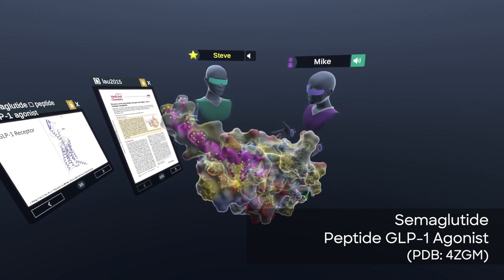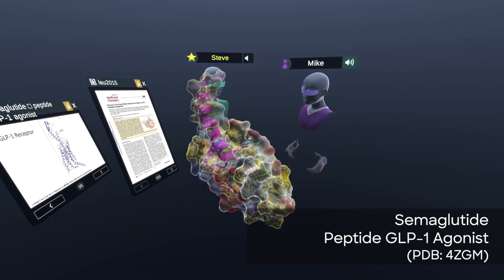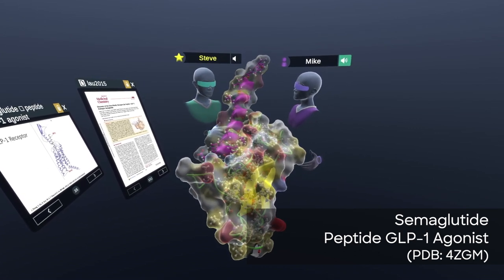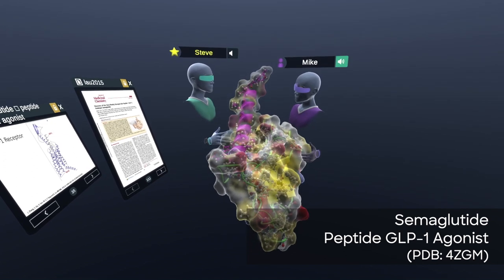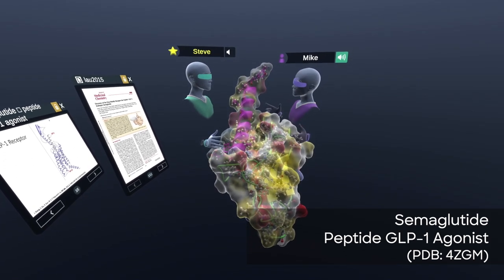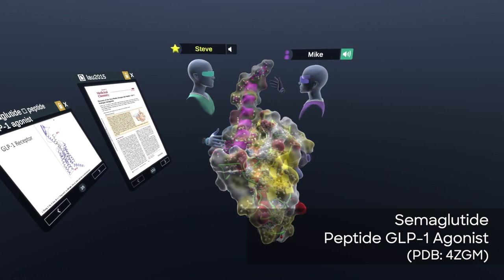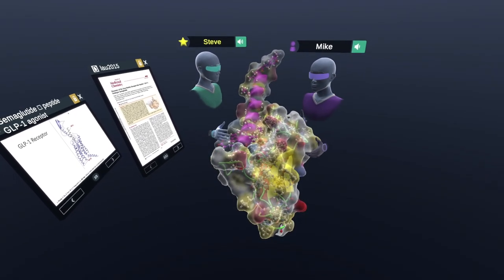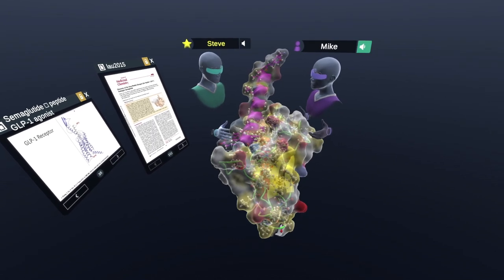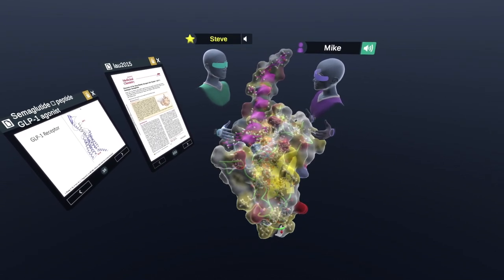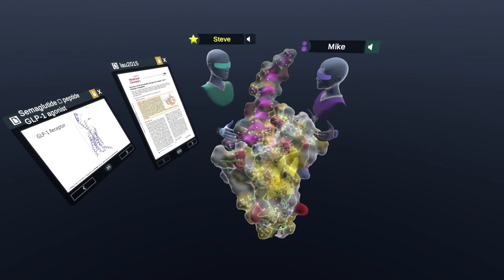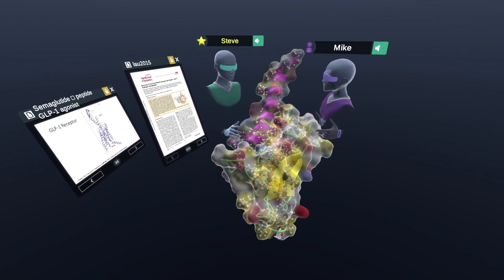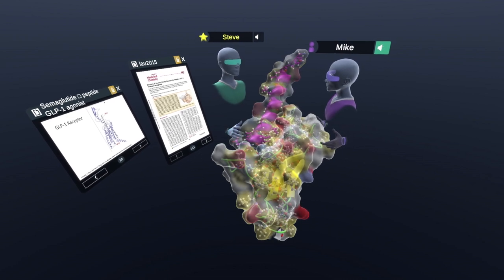One thing that I wanted to mention about semaglutide is Novo Nordisk took the peptide and attached a fatty acid to it, which we're not showing here in the rendering of the crystal structure. And that fatty acid in the body allows it to bind albumin, a protein in plasma. And that association allows the drug to stay in the body much longer than it usually would. Usually the GLP-1 peptide would be chopped up easily. So we'll talk a little bit about that too.